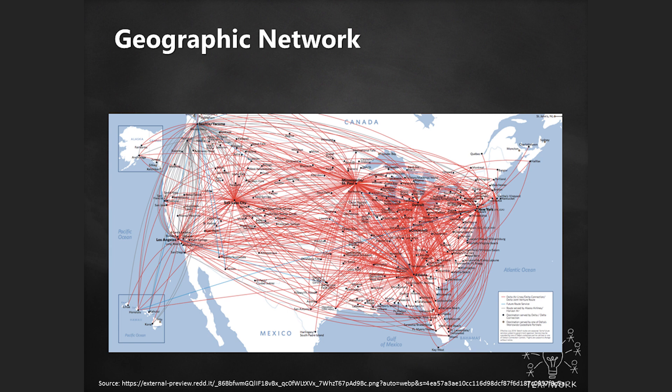This is something you might recognize from the back of a flight magazine — a Delta flight path network. This is still a network, because it's showing how cities are connected. You could still apply the same metrics, because it's showing how many degrees it would take to get from one city to another. If you're in Johnson City going anywhere other than Charlotte or Atlanta, it's probably going to be two. I included this to show that it's not always humans — it could be corporations, it could be airplanes.